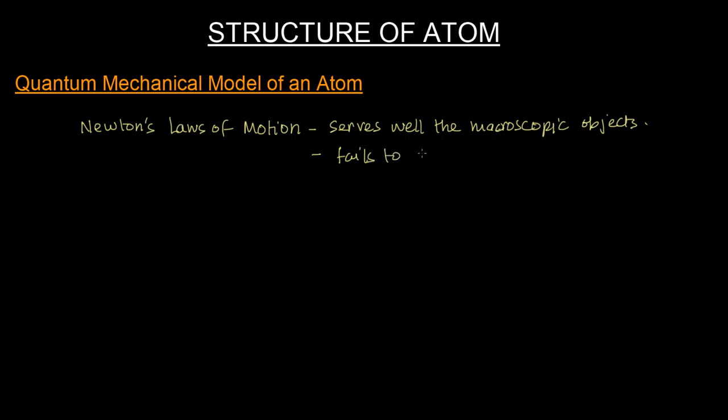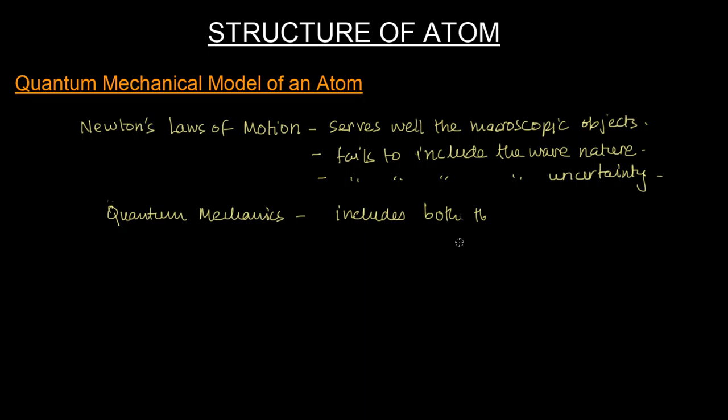It fails to include the wave nature, right? And fails to include the uncertainty. And the one that includes both of them is called quantum mechanics. So this quantum mechanics includes both the wave nature and the uncertainty principle.